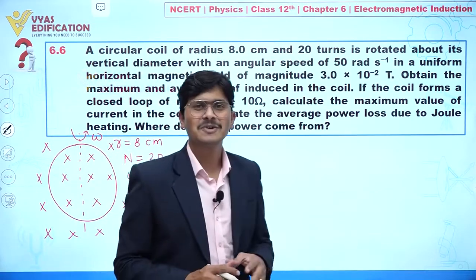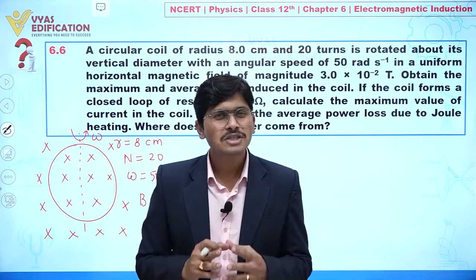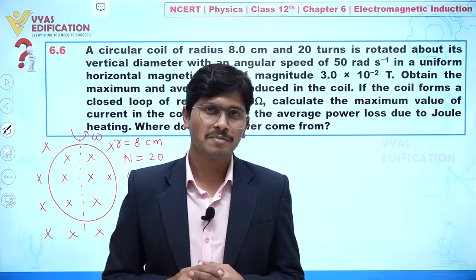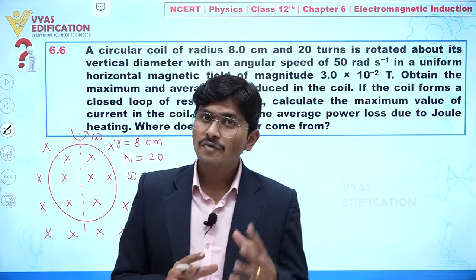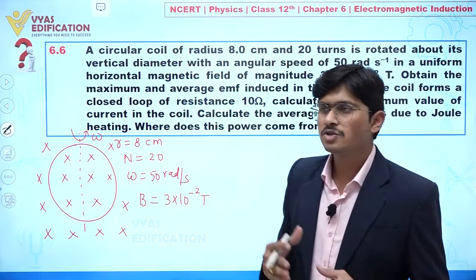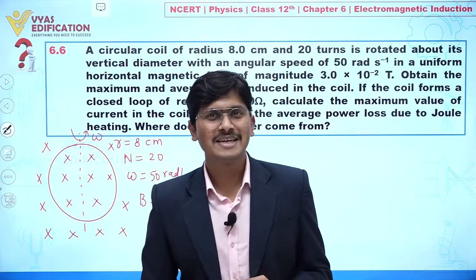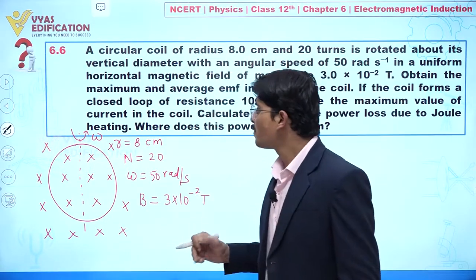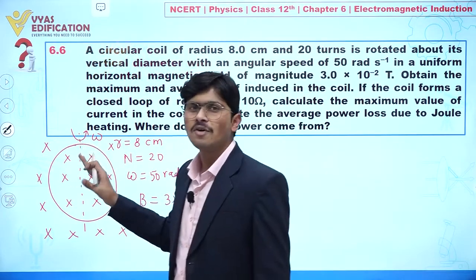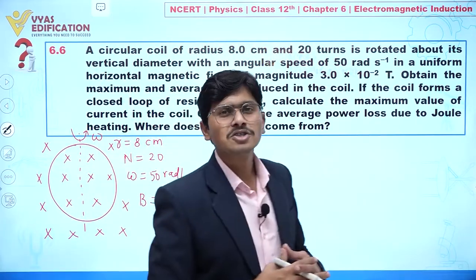Induced EMF is generated whenever there is a change in magnetic flux. Magnetic flux can change due to a change in area, magnetic field, or orientation. In this case, the magnetic field is constant and the radius is constant, so it is the orientation — the angle between the area vector and the magnetic field — that is changing.